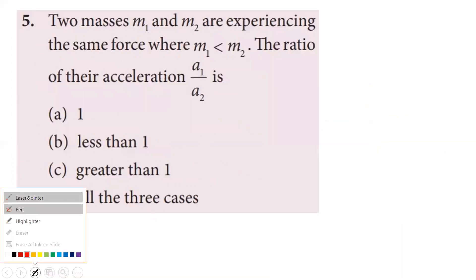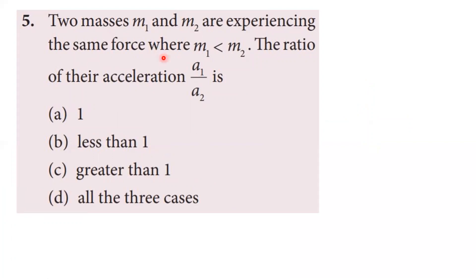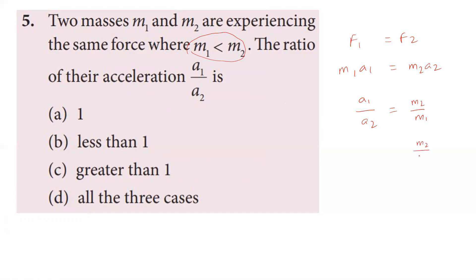Fifth question: two masses M1 and M2 experience the same force, with M1 less than M2. The ratio of their accelerations — since force equals mass times acceleration, F = M1·A1 = M2·A2. Therefore A1/A2 = M2/M1. Since M2 is greater than M1, A1/A2 is greater than 1. The answer is the third option.